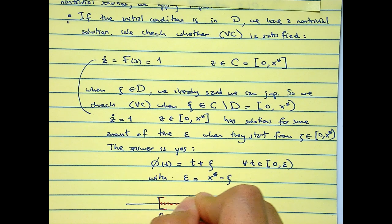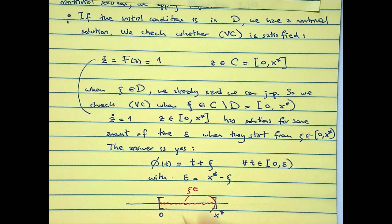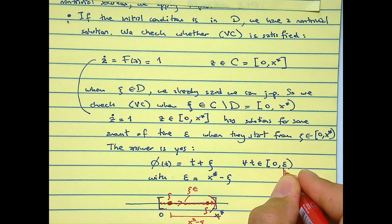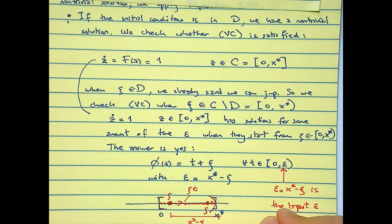This is easier to write than to say because basically what we are saying is this is my 0, this is my X star. I'm only checking initial conditions C in this open set, so this is where C belongs to in this set. If I pick a C here, you can see that you have X star minus C amount of flow time, because your solutions flow all the way to X star.